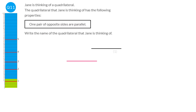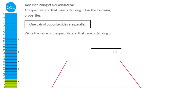If you draw a quadrilateral with exactly one pair of parallel sides and join them up with four sides, the shape will always be a trapezium. You might think a rectangle or square has one pair of parallel sides, but actually they have two pairs. The definition of a trapezium is it has just one pair of parallel sides, so any quadrilateral with only one pair of parallel sides is a trapezium.